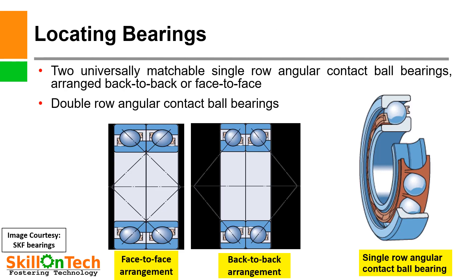Continuing with locating bearing types: two universally matchable single-row angular contact ball bearings arranged back to back or face to face are also suitable. In this picture you can see a face-to-face arrangement and a back-to-back arrangement of angular contact ball bearings. Here you can also see single-row and double-row angular contact ball bearings, all of which are suitable for locating bearings.